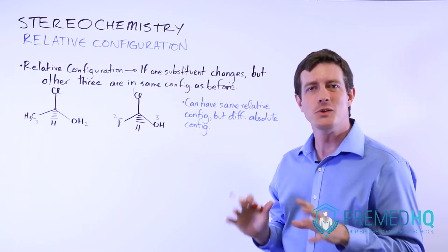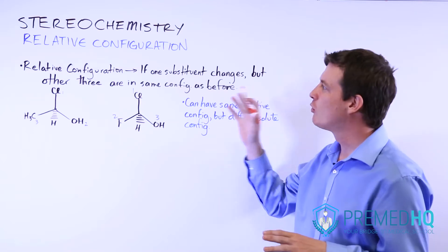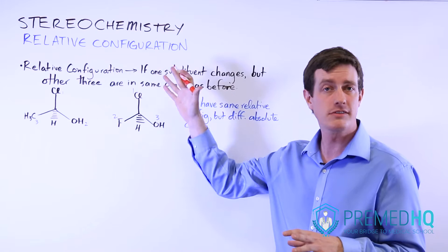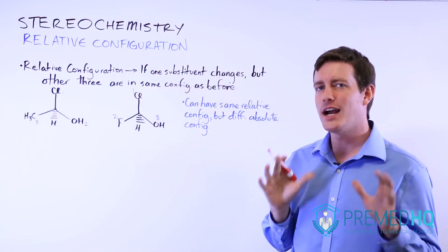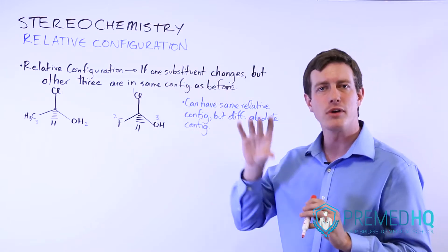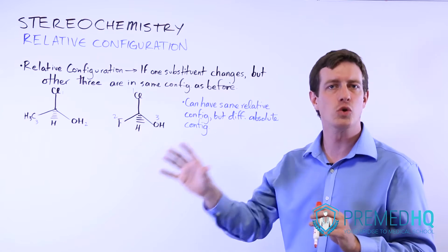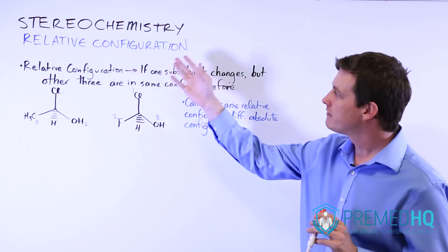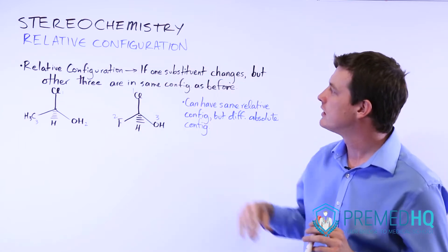So before we move on to optical activity, we'll just do a quick note on something called relative configuration. Remember that absolute configuration is all about priority and it is either R or S. Relative configuration is something slightly different.